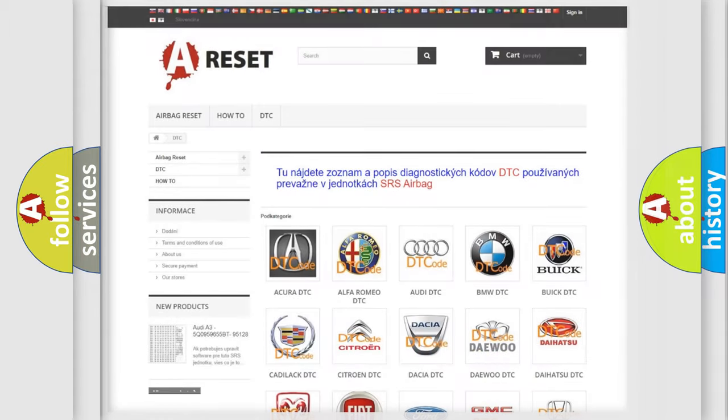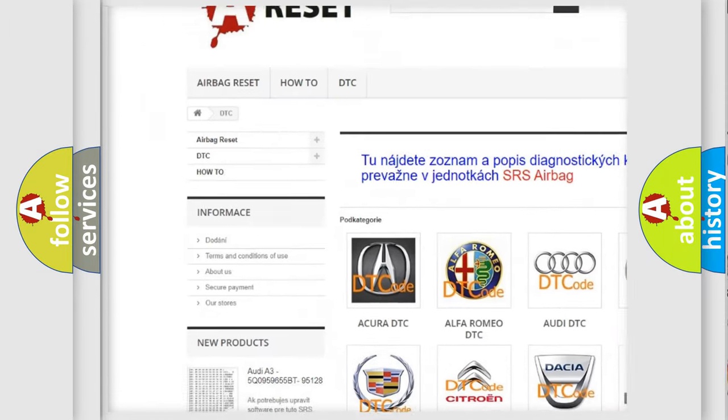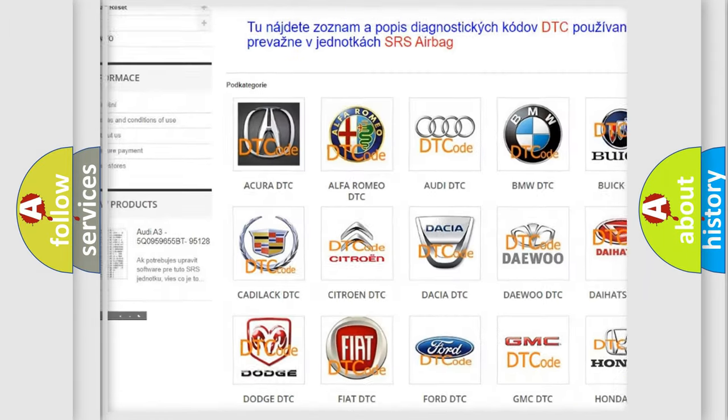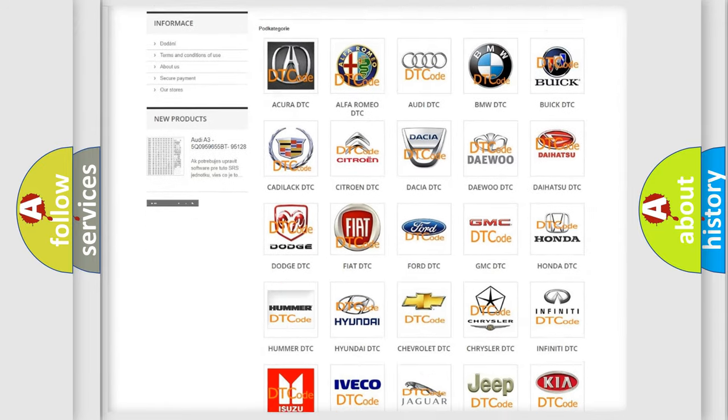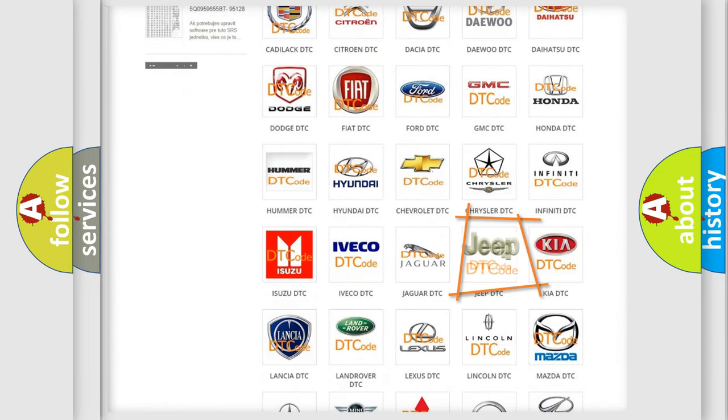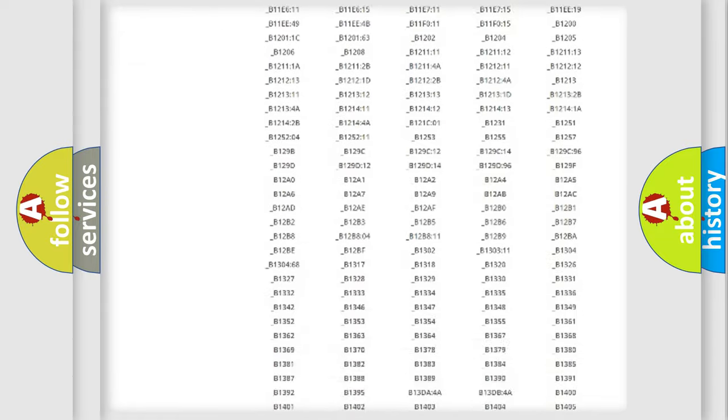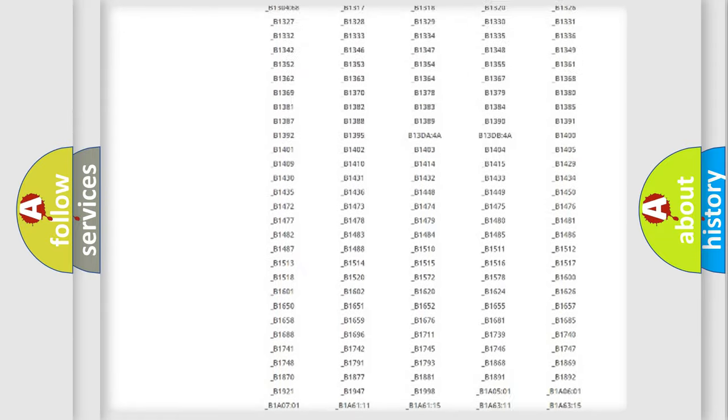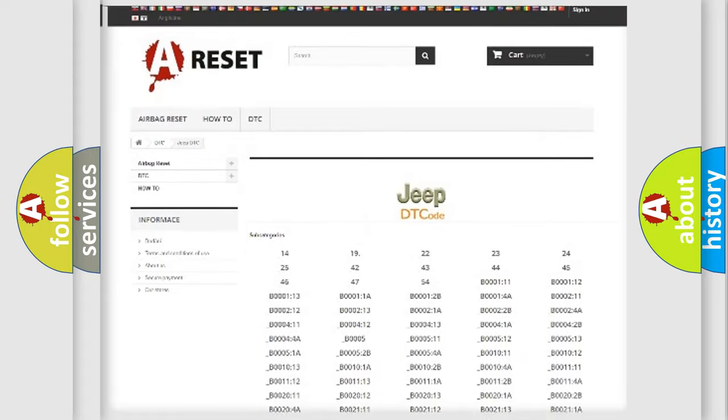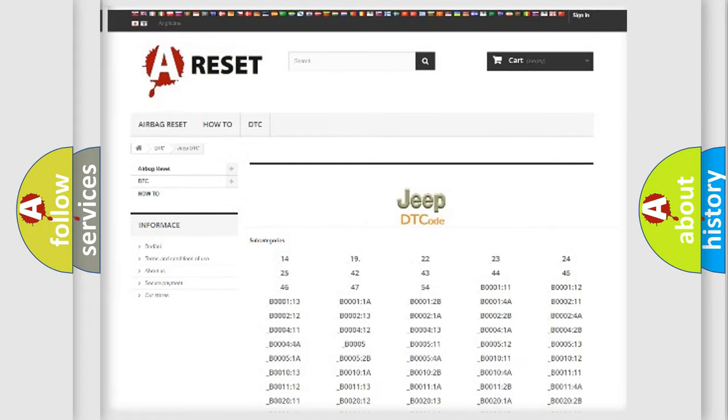Our website airbagreset.sk produces useful videos for you. You do not have to go through the OBD2 protocol anymore to know how to troubleshoot any car breakdown. You will find all the diagnostic codes that can be diagnosed in Jeep vehicles, also many other useful things.